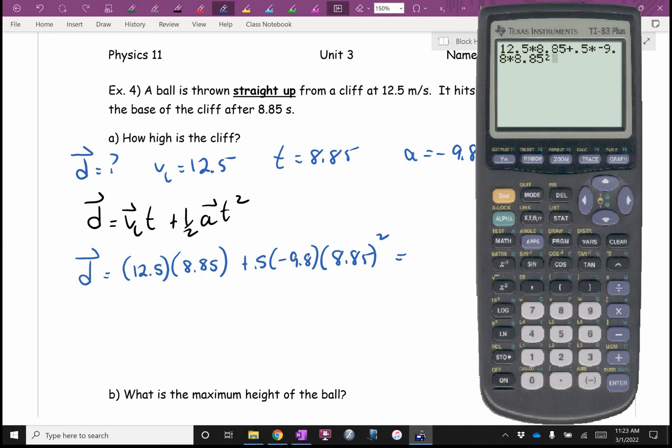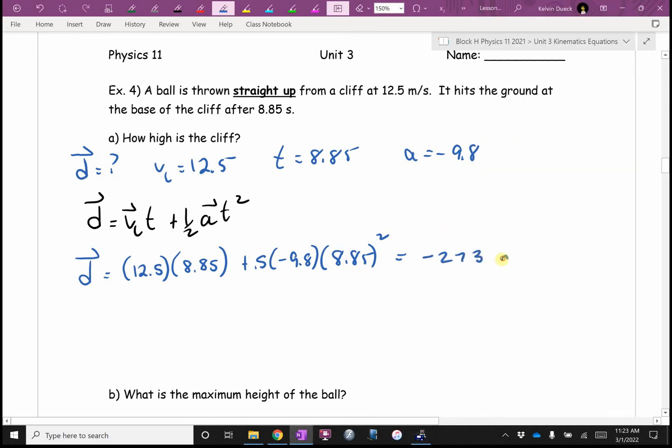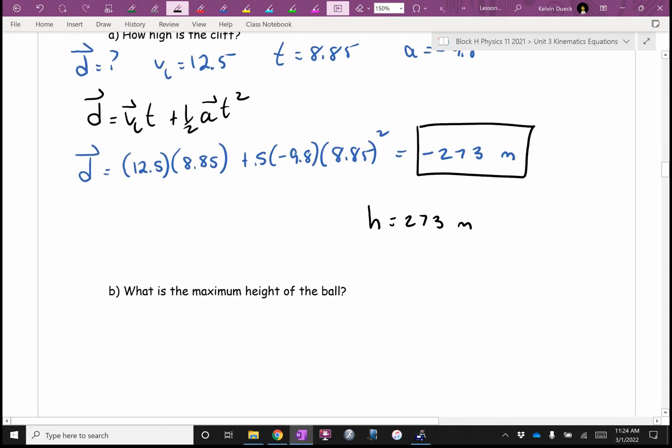D equals VI T plus a half A T squared. Diego, what do we need to get by itself? Bonus. So, plug and chug. Here we go. D is going to be VI 12.5, T 8.85 plus 0.5 times negative 9.8 times, don't forget the squared, 8.85 squared. Did you get negative 273 meters? Or if you reported it as a height, positive 273 meters, but I'm not that fussy.